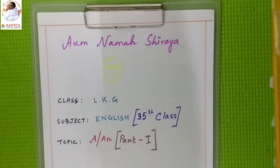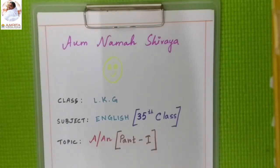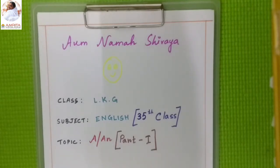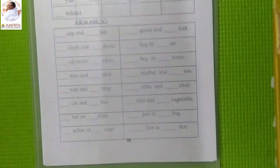How are you all, hope fine. Well children, today we will be learning a new thing, that is 'a' and 'an'. You know, 'a' and 'an' are called articles. We use 'a' before nouns starting with consonant sound, and we use 'an' before words starting with vowel sound. So take out your worksheet book and turn to page number 27.